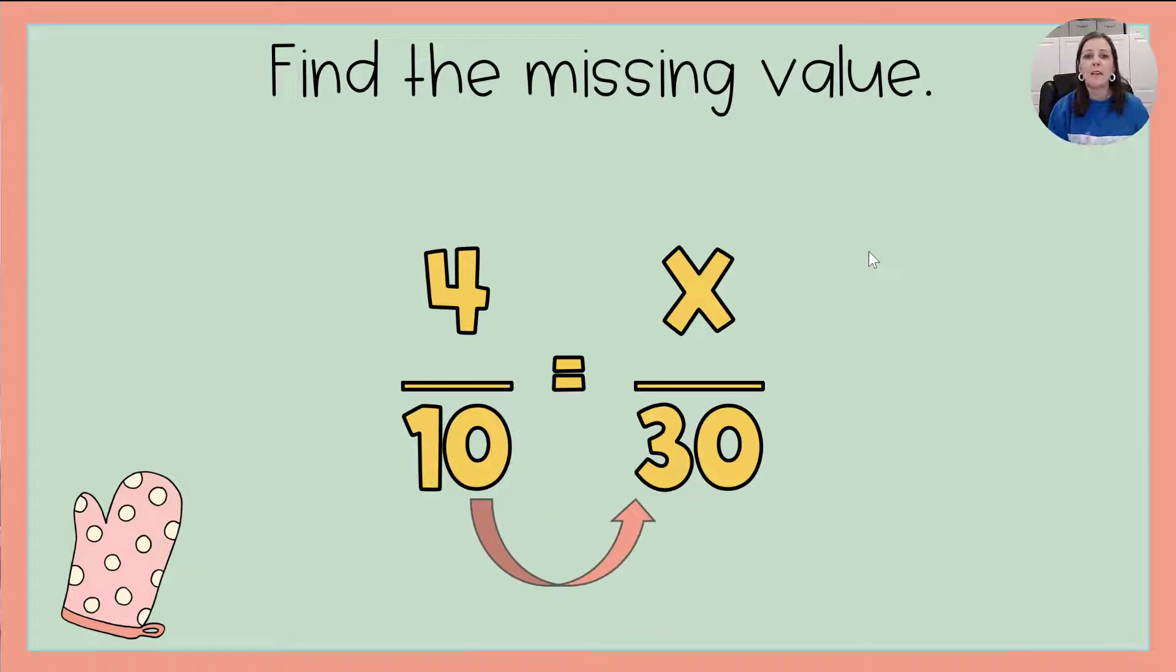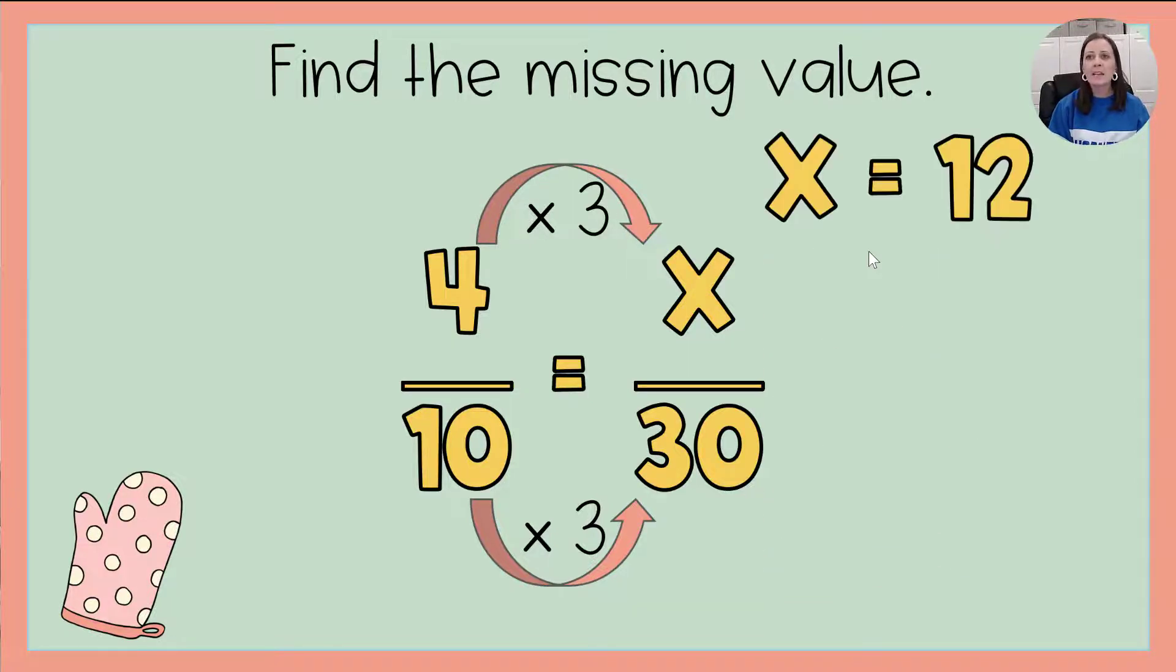well what did we do to 10 to get 30? We multiplied by 3. So I have to do the same thing to 4. What do I do to 4 to get x? I multiply it by 3. What is 4 times 3? Yeah, x is 12.